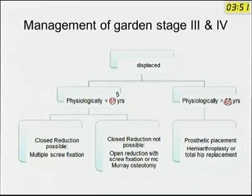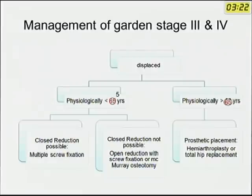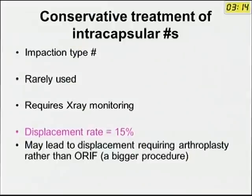For Garden stage 3 and 4 displaced fractures, patients with a physiological age less than 65 years should undergo closed reduction if possible with multiple screw fixation. When closed reduction is not possible, open reduction with or without osteotomies around the hip is indicated. Physiological age refers to the comorbid conditions associated with the patient. For those with physiological age more than 65 years, prosthetic replacement — either hemiarthroplasty or total hip replacement — is preferred.